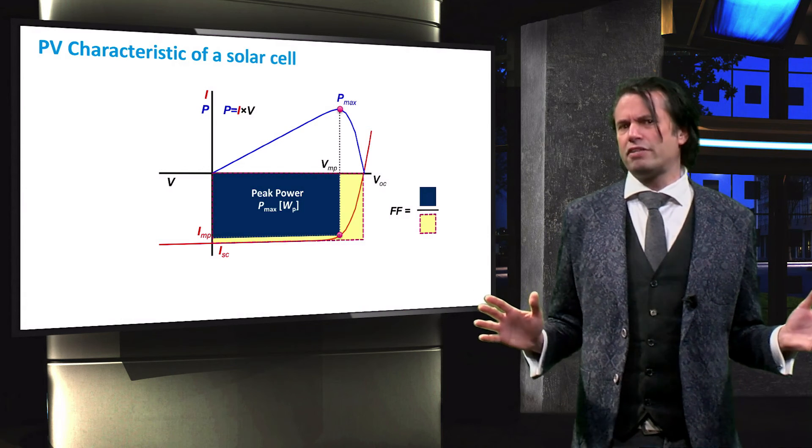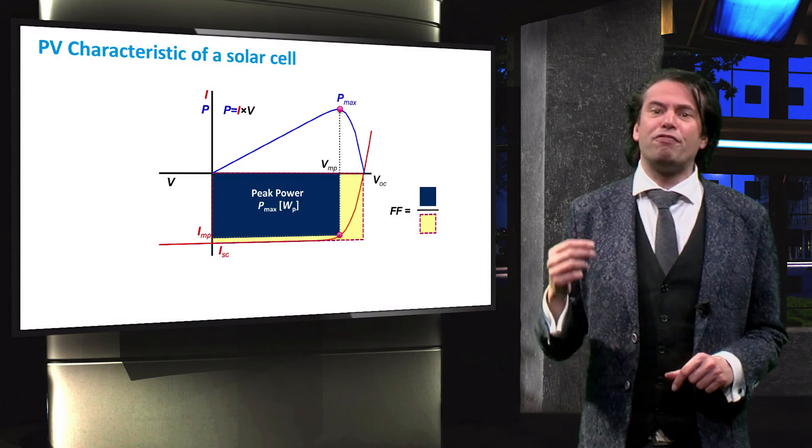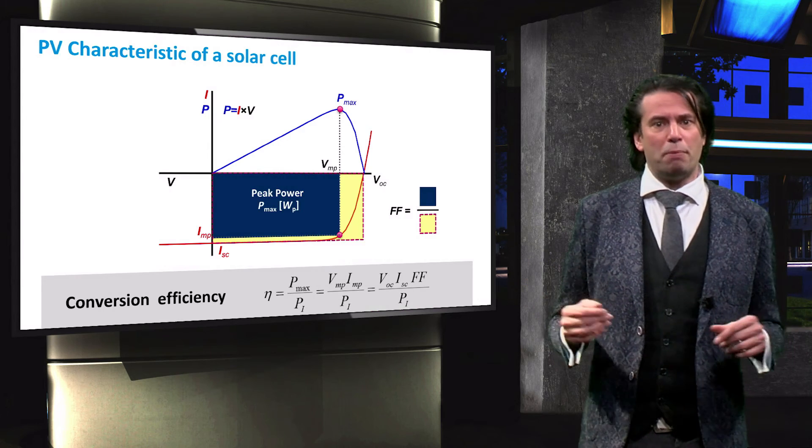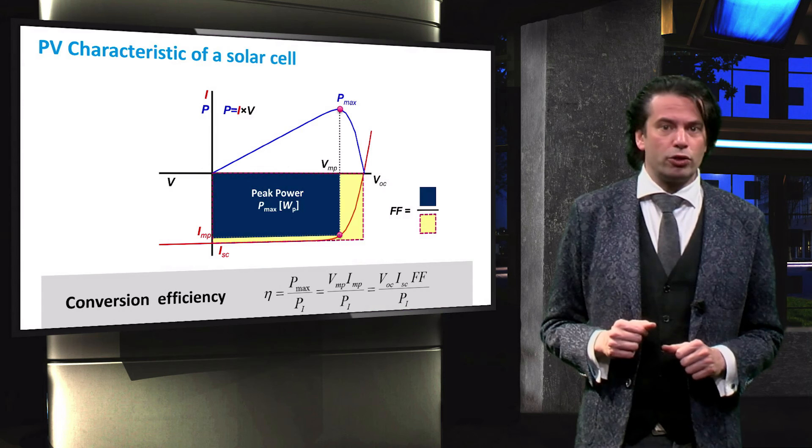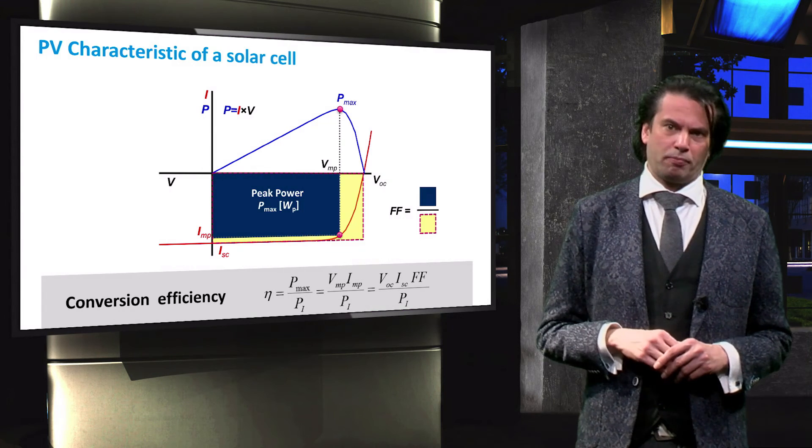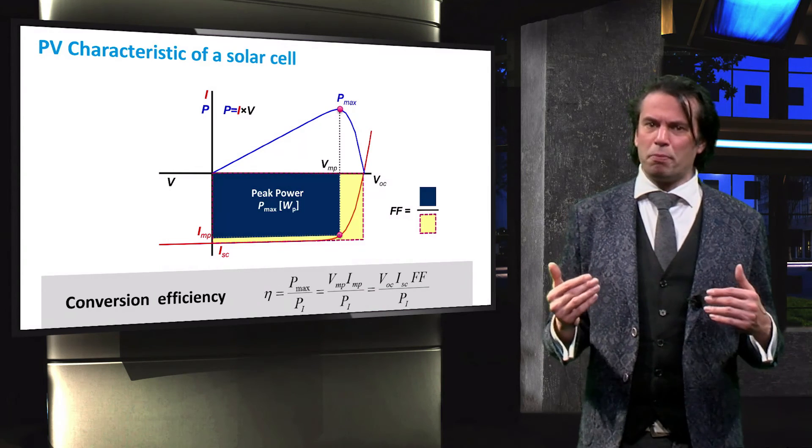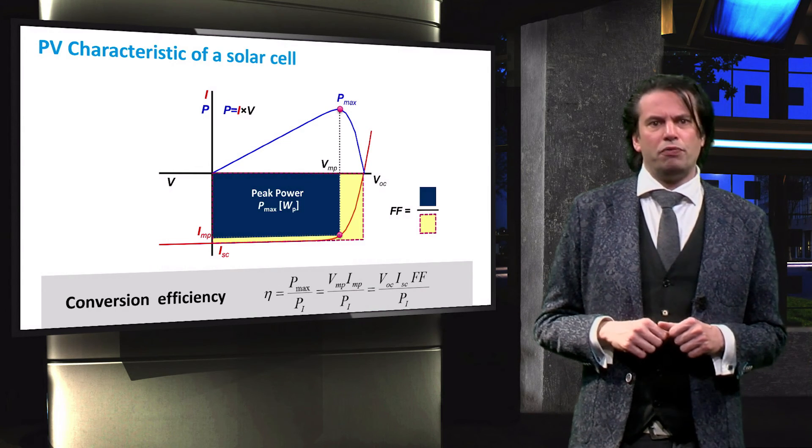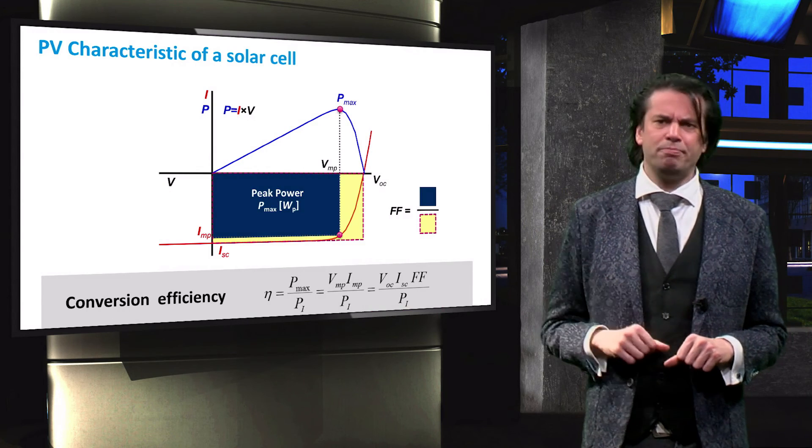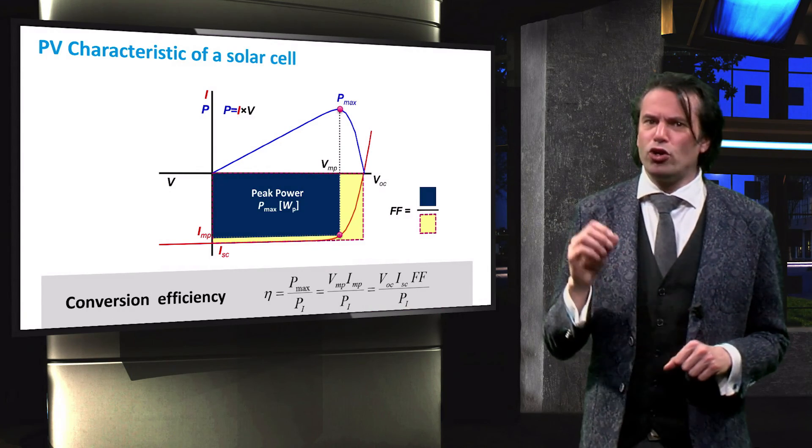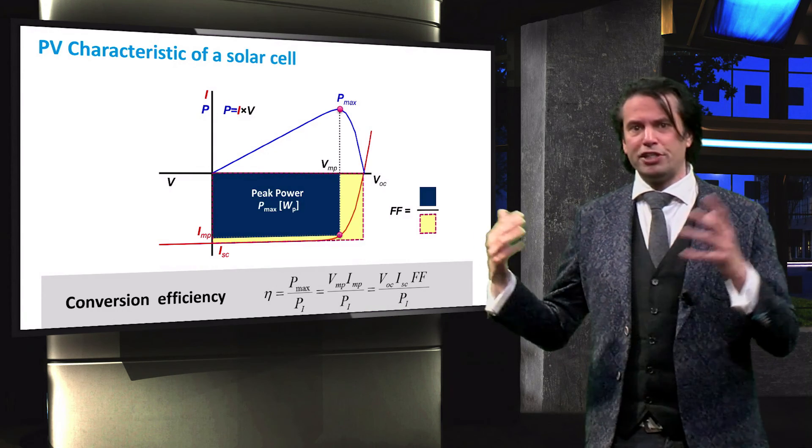With these terms we can define our conversion efficiency, eta. The efficiency of any such system is first defined by the power output divided by the input power, which we will call Pi. With these equations you can see that we can call the maximum power output simply Pmax. We could also define it as the product of VMP and IMP. Finally, we can also use the VOC and ISC and the fill factor, all of these terms are equal.